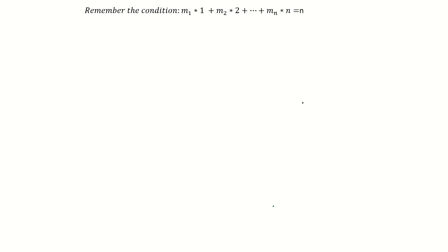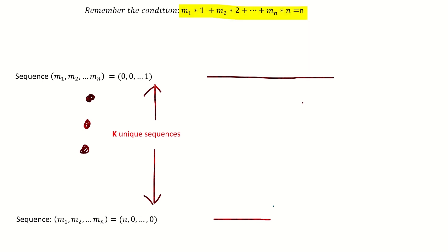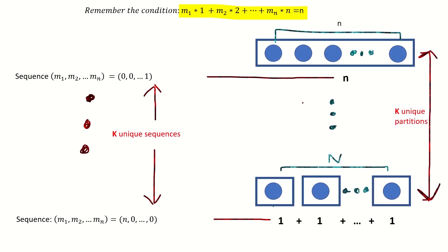So generally, when we sum over all k unique sequences of numbers m1 through mn that satisfy the constraint in Faa di Bruno's formula, we are in a sense summing over all unique integer partitions of n.